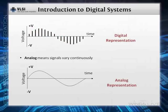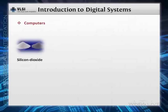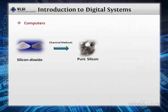Before getting into digital systems, we will discuss the common topic of computers. Do you know how computers are made? People started saying that computers are made by showing some stuff. Initially, it begins with silicon dioxide. By using some chemical methods, this silicon dioxide is converted into pure silicon, which is a semiconductor.